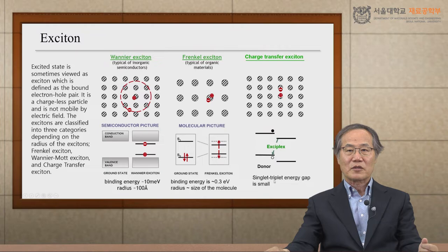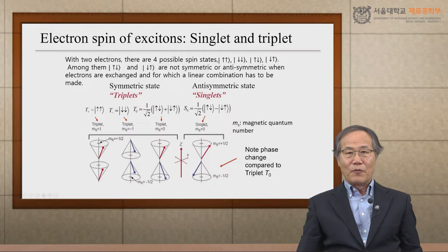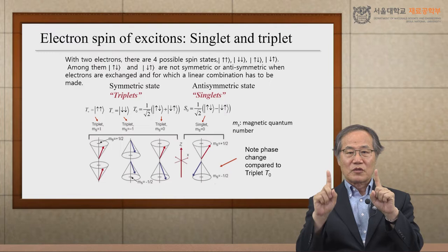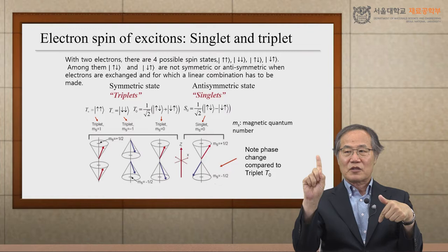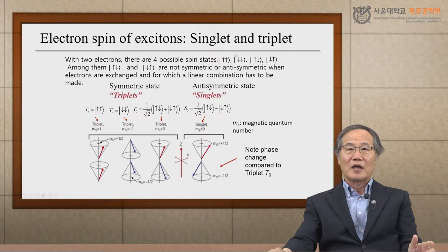One more interesting point in organic semiconductors is the consideration of electron spin states of excitons, so-called singlets and triplets. If excitons are formed by combining electron-hole pairs, those particles have spins — two choices: up and down. If you make a combination, you get up-up, down-down, up-down, and down-up. So there are four possible spin states in total.